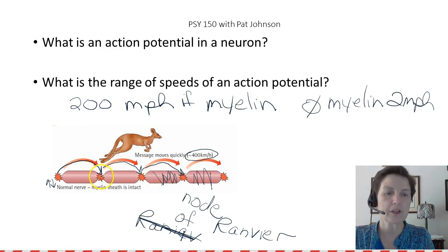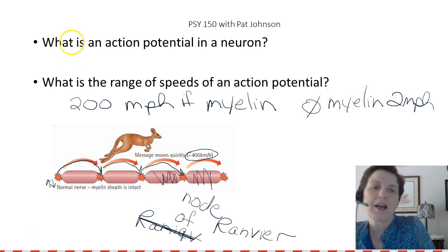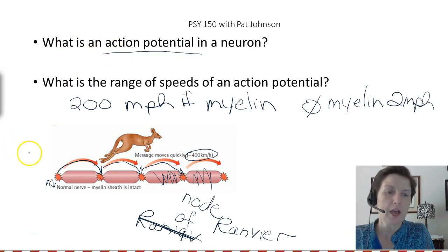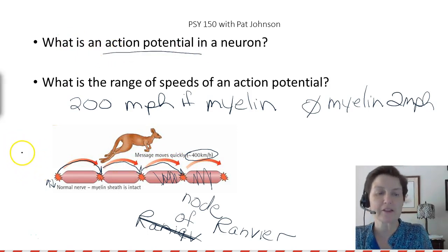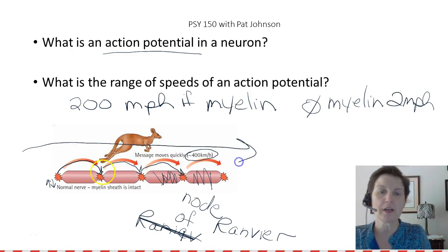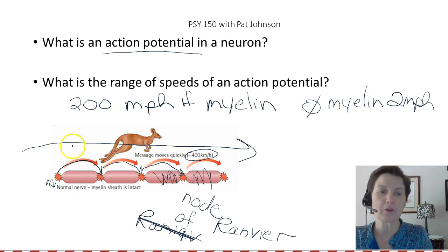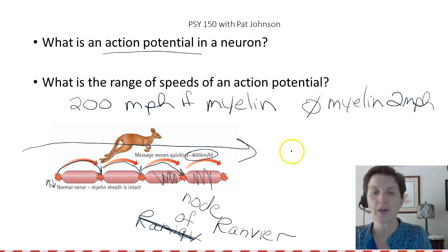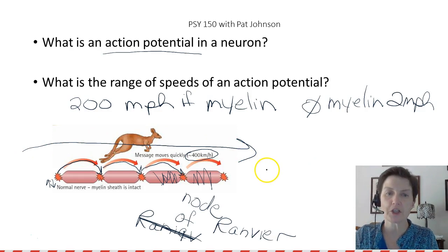The node of Ranvier is the exposed area of axon, and that's how the neural impulse jumps. That's what we mean by an action potential — an action potential is that message going down our neuron, getting it from one end of the neuron to another.